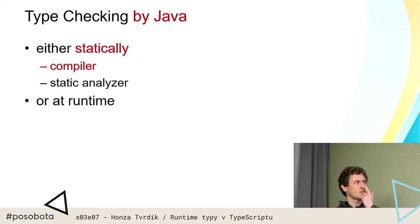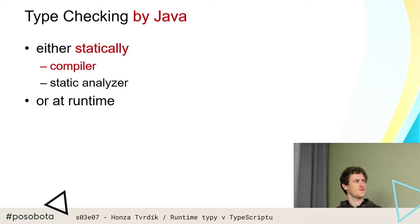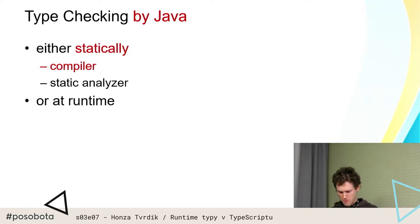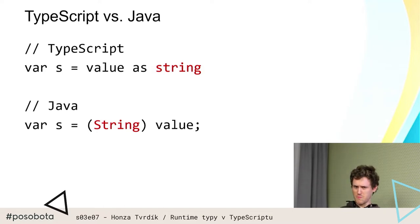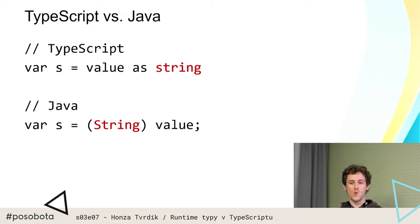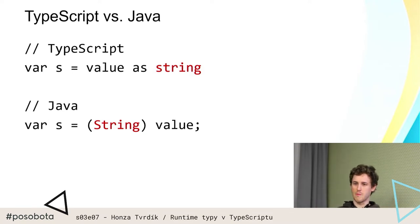Což na první pohled by se mohlo zdát, že je to podobný přístup jako třeba Java. Java to taky dělá staticky, taky má kompilátor, taky má typy, tak to vypadá podobně. Nicméně Java se od TypeScriptu velmi zásadně liší, protože TypeScript všechny ty typy odstraní — po kompilaci tam nezbyde nic, zatímco Java tam ty typové informace nechá.